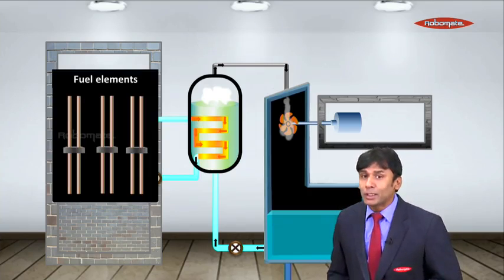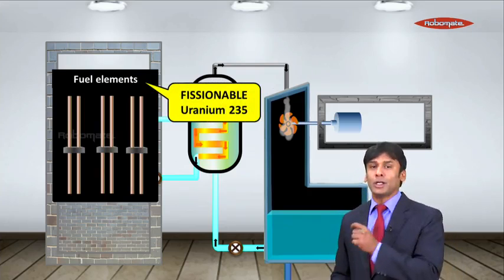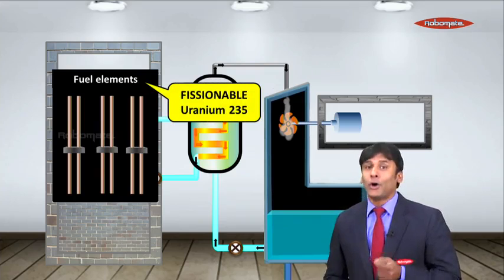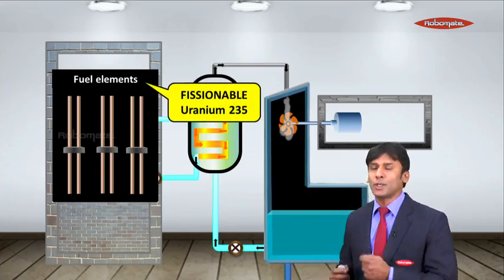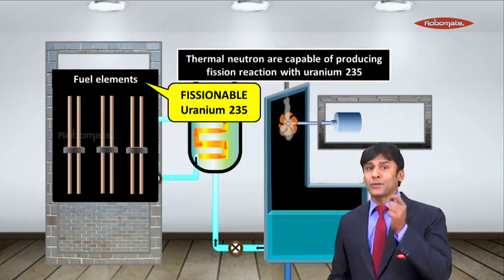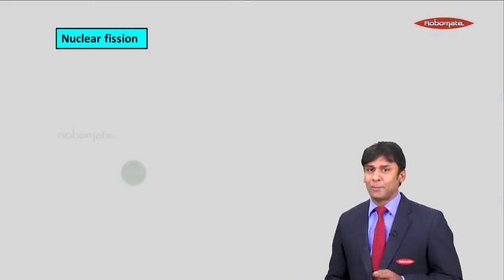Firstly to begin with fuel elements. Now the main fuel element which a nuclear generator has is fissionable uranium-235 or plutonium-239 can also be used as a fuel element. Thermal neutrons are capable of producing fission reaction with uranium-235. Let's understand how this happens.